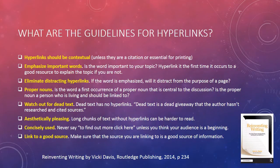Let's go over a checklist, taken from my book 'Reinventing Writing' on page 234, about how to make sure you should have hyperlinks. First, hyperlinks should be contextual. Hyperlinks should emphasize important words — is that word important to your topic? Hyperlink it the first time it occurs, to a good resource. Not just any resource — a good resource.